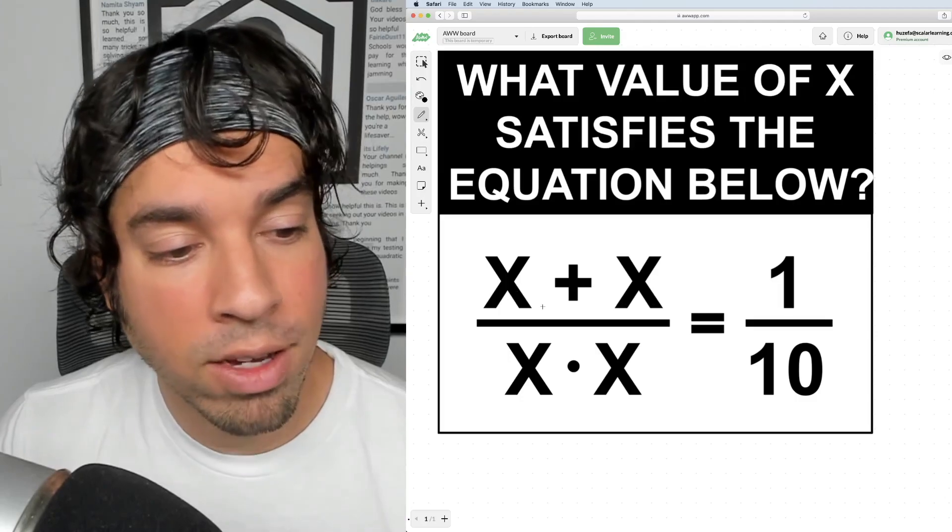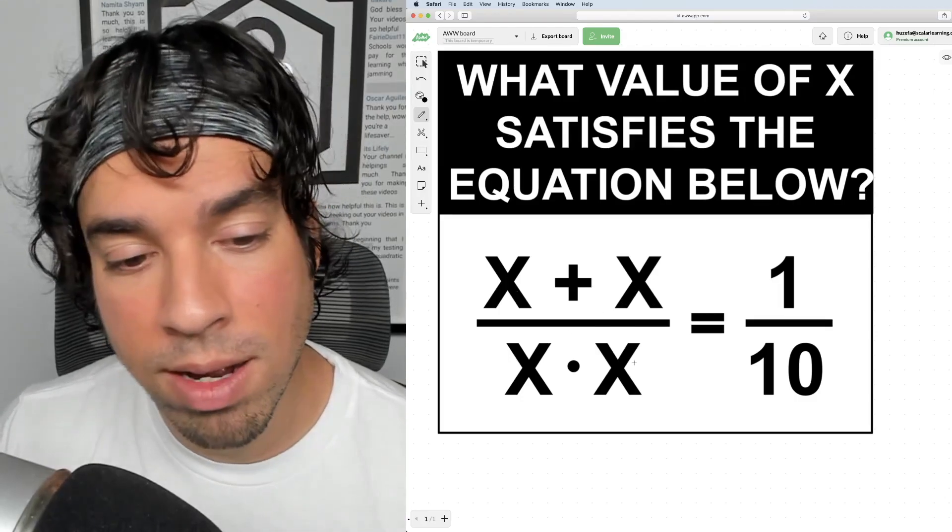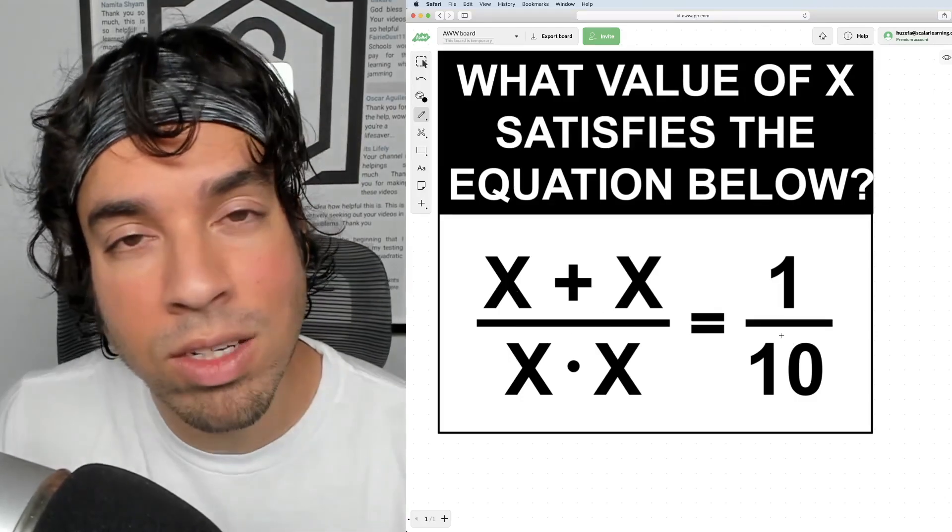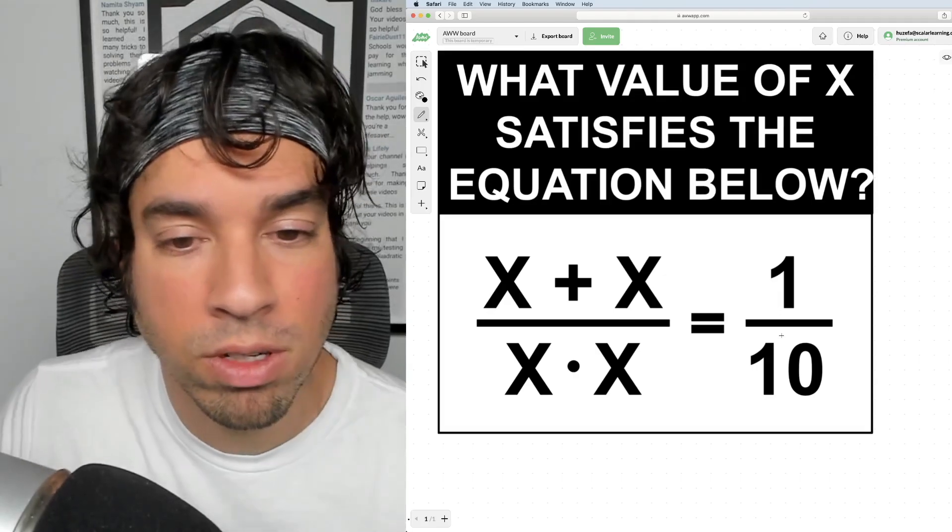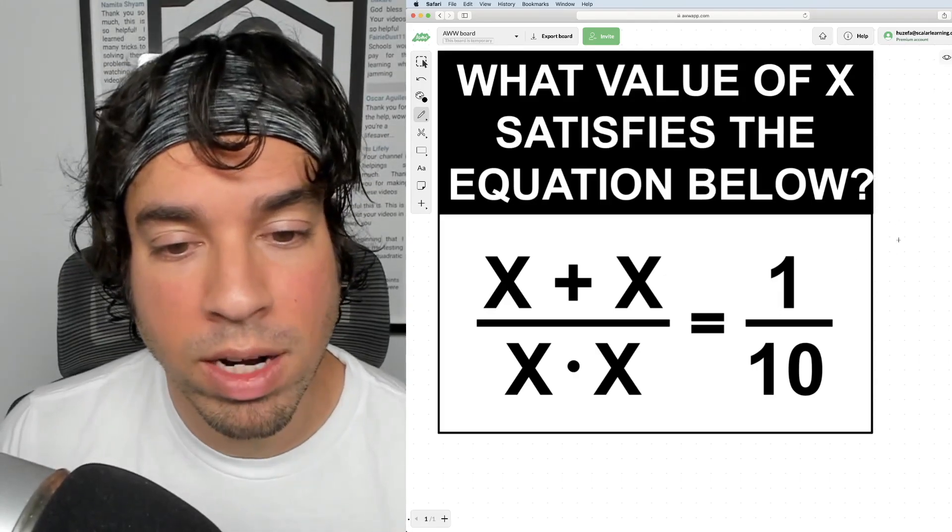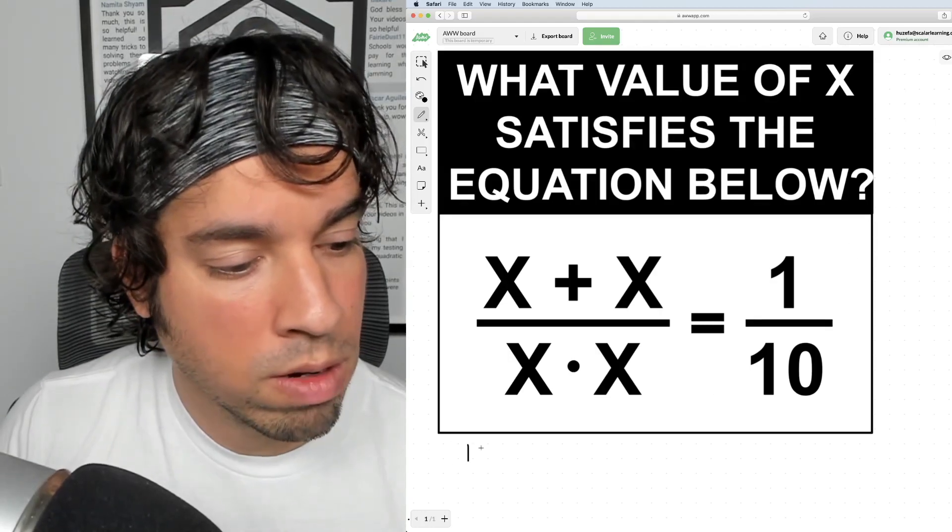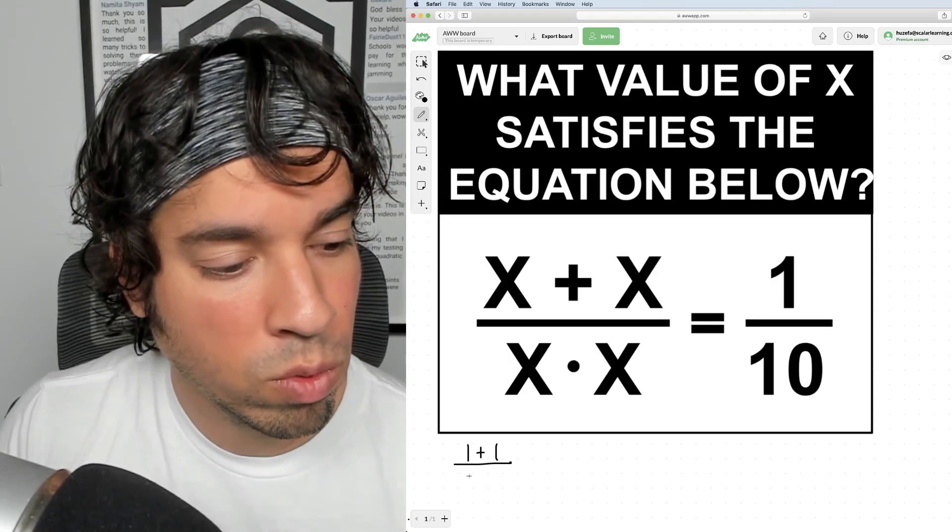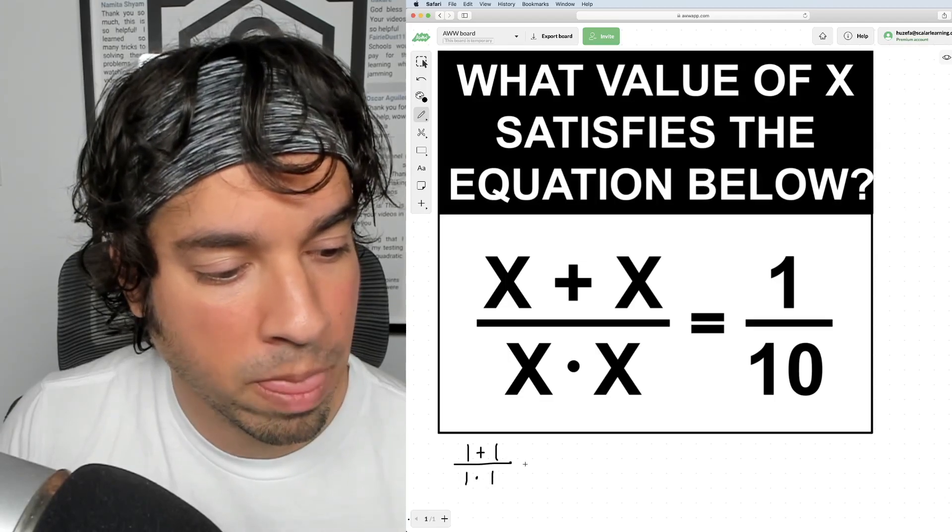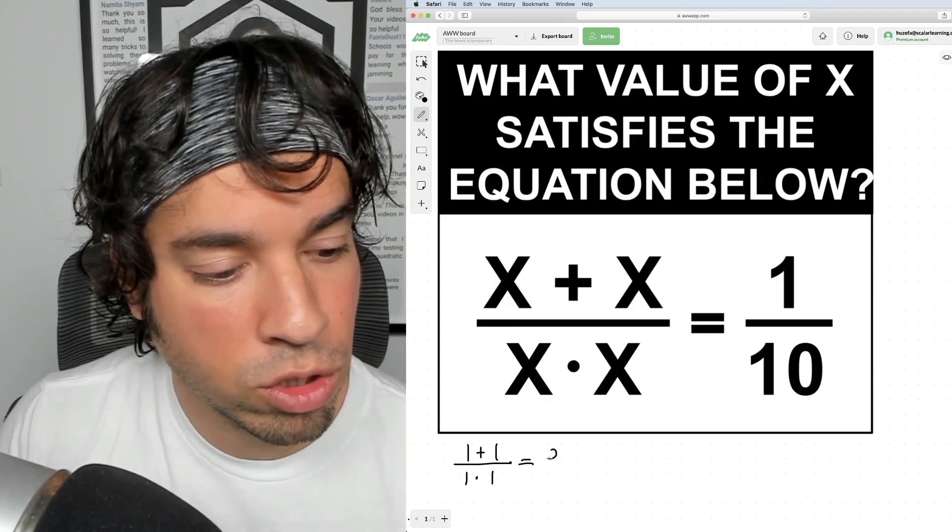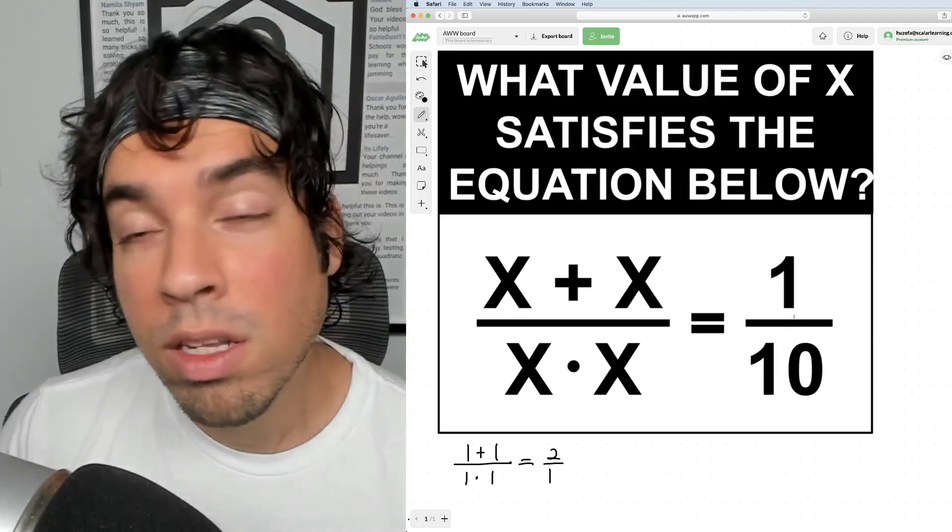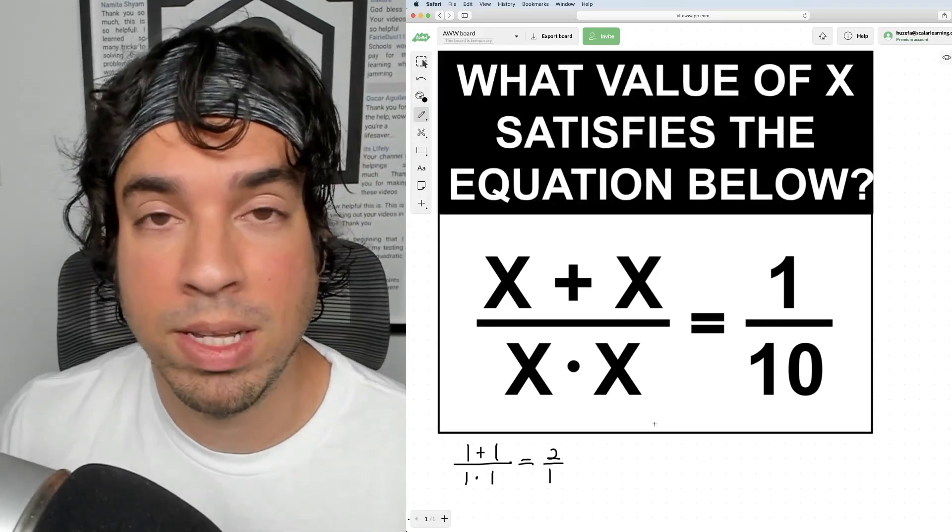So I see that I've got a value plus itself over a value times itself equals one-tenth. Now I can do a little bit of trial and error. I can start, for example, with 1. So if I start with 1, it would be (1 + 1) / (1 · 1). What does that equal? That equals 2/1. So that's pretty far off from 1/10. Okay, so I'm going to ramp it up a bit.